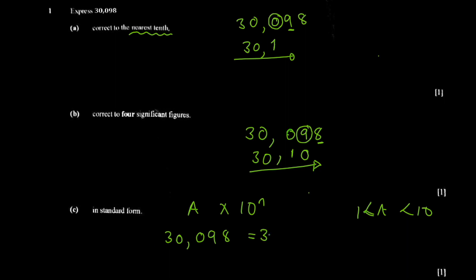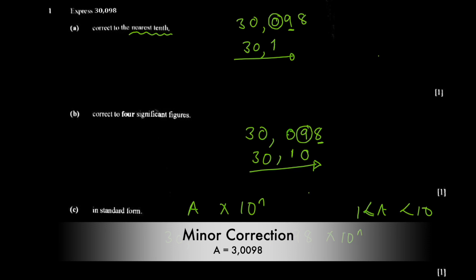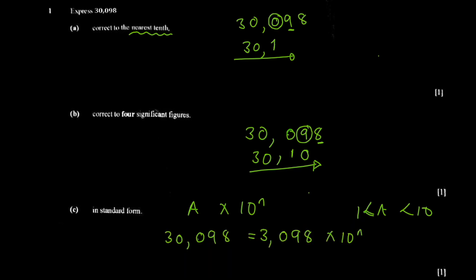For 30.098, your a value should be a number with the decimal place placed after the first significant figure — which is three — giving 3.098. So it's 3.098 × 10 to the power n. To find n, you shift the decimal point: the decimal is now here, and shifting it one place to the left means n is positive and equals one. So the answer is 3.098 × 10¹.